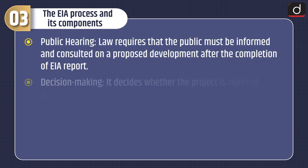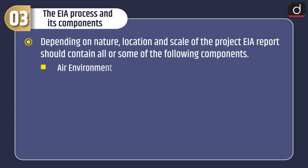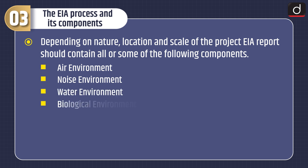Public hearing: law requires that the public must be informed and consulted on a proposed development after the completion of the EIA report. Decision making decides whether the project is rejected, approved, or needs further change. Post monitoring checks to ensure that the impacts of the project do not exceed legal standards and that mitigation measures are implemented as described in the EIA report. Depending on the nature, location, and scale of the project, the EIA report should contain all or some of the following components.